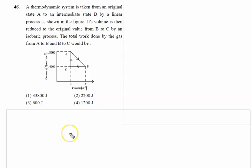A thermodynamic system is taken from an original state A to intermediate state B. A to B it is moving by a linear process as shown in the diagram. Its volume is then reduced from B to C by an isobaric process.